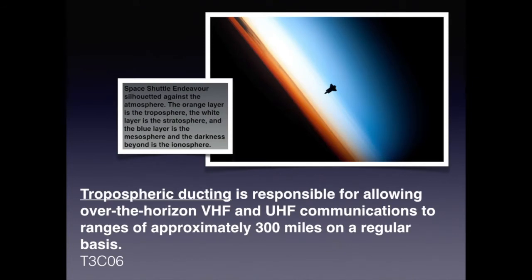I have to admit that I'm a bit of a space nerd. You can see in this photo the space shuttle Endeavour is silhouetted against the atmosphere. The darkest portion to the right is the ionosphere, below that is the mesosphere, below that is the stratosphere, and the orange portion is the troposphere. For this particular question, you need to know tropospheric ducting is responsible for allowing over-the-horizon VHF and UHF communications to ranges of approximately 300 miles on a regular basis.